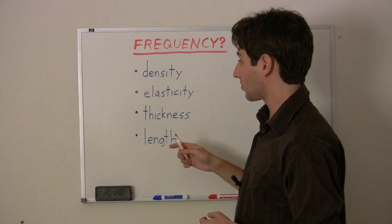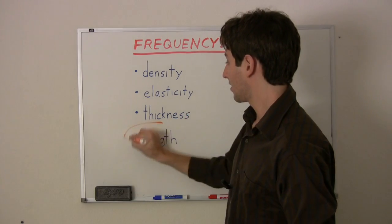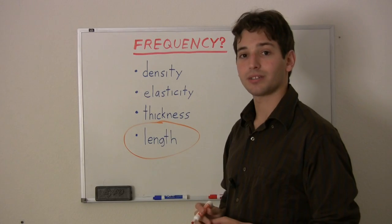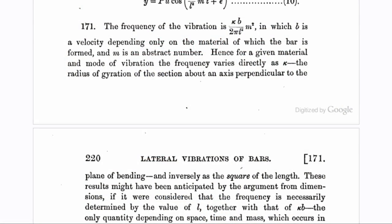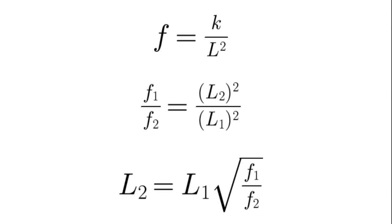So for our bars, we're going to keep the first three the same and just vary the length to vary the frequency. If we hit the books again, we'll find that for a given material, the frequency of vibration varies inversely as the square of the length. That means if we take one bar and measure its length and frequency, we can figure out how long a bar needs to be to get a different frequency.